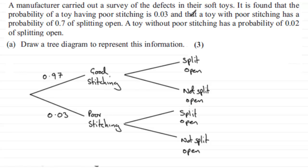Then it says, a toy with poor stitching has a probability of 0.7 of splitting open. So if we've got a toy with poor stitching, then the probability that it will split open, this branch here, has to be 0.7, which means then that this probability has to be 0.3 to make it up to 1 whole one.